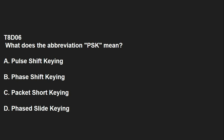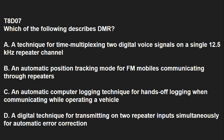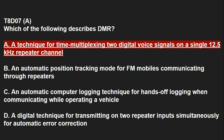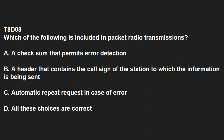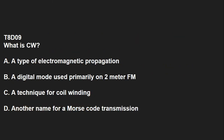T8D06: What does the abbreviation PSK mean? Phase shift keying. T8D07: Which of the following describes DMR? DMR is a technique for time multiplexing two digital voice signals on a single 12.5 kHz repeater channel. T8D08: Which of the following is included in packet radio transmissions? All of the above: a checksum that permits error detection, a header that contains the call sign of the station to which the information is being sent, and automatic repeat request in case of error. T8D09: What is CW? CW is another name for Morse code transmission.